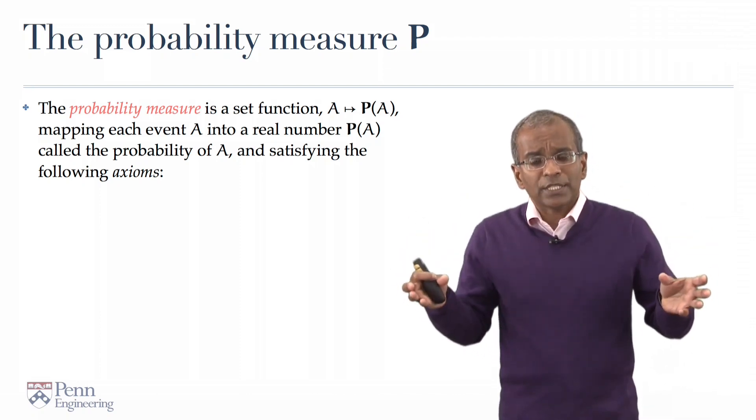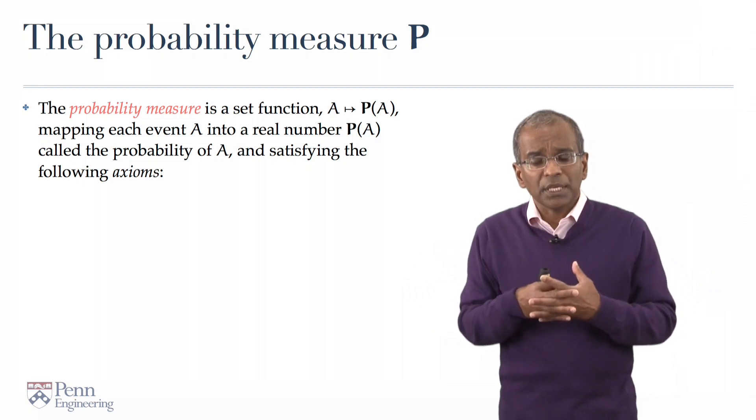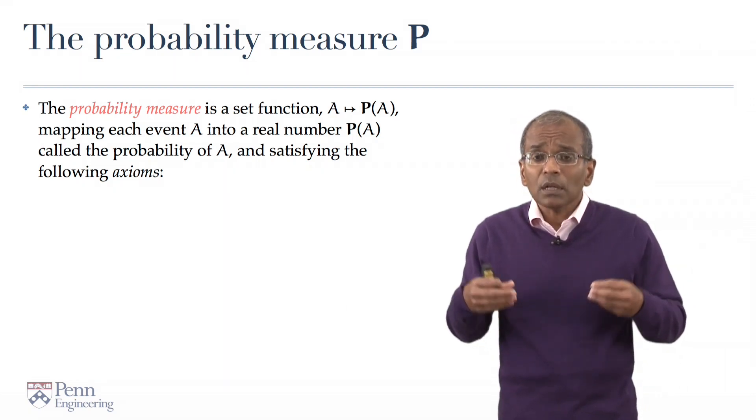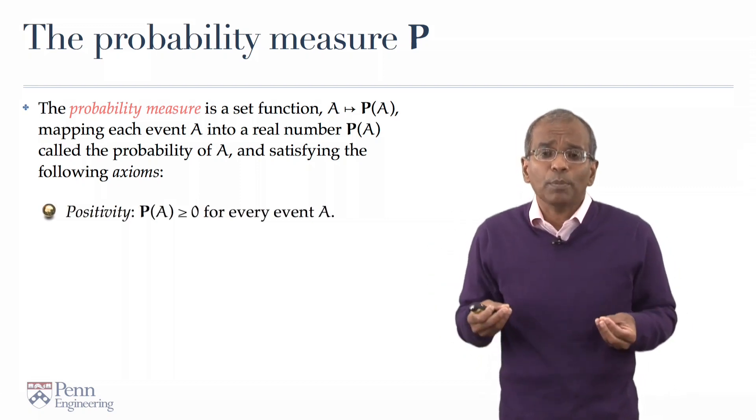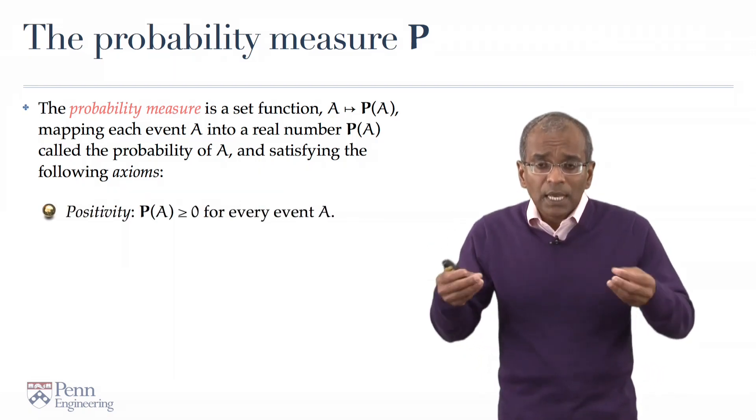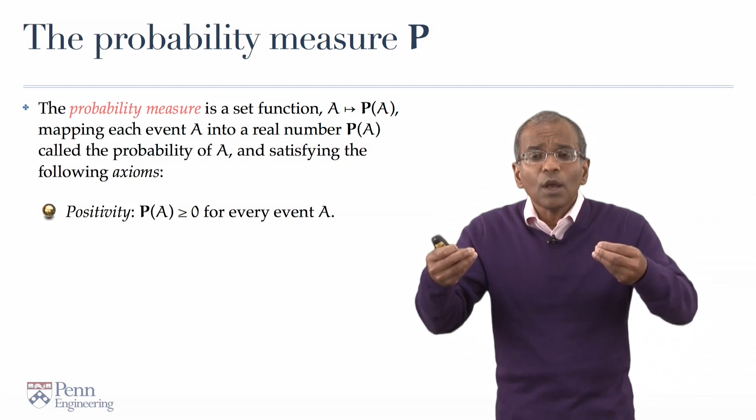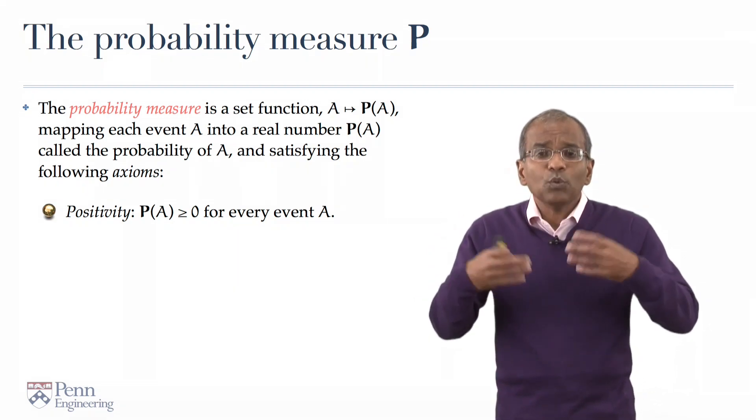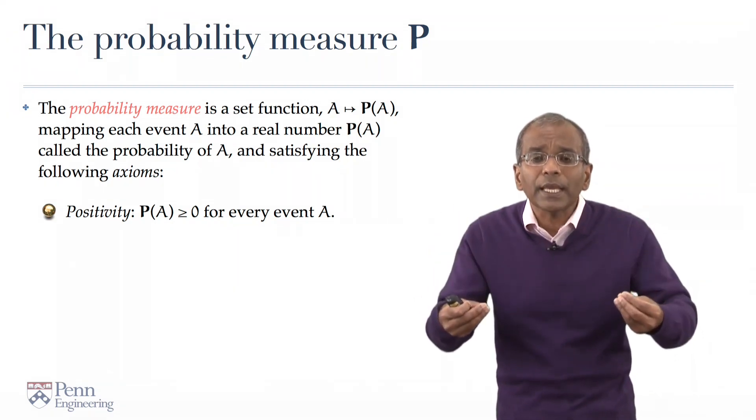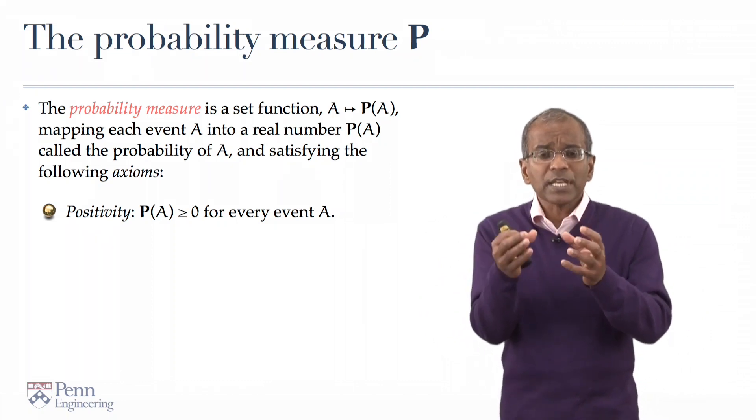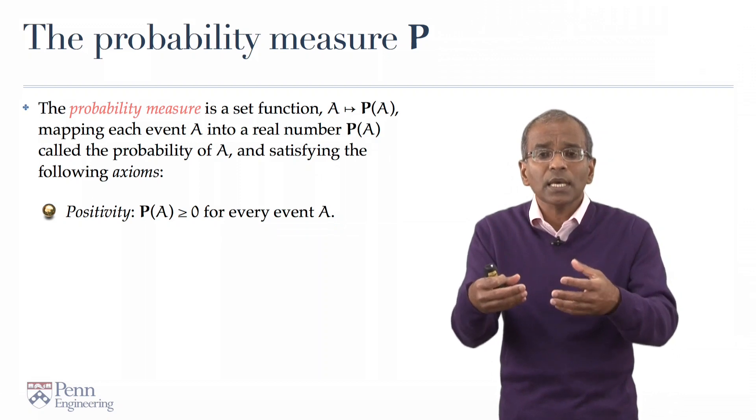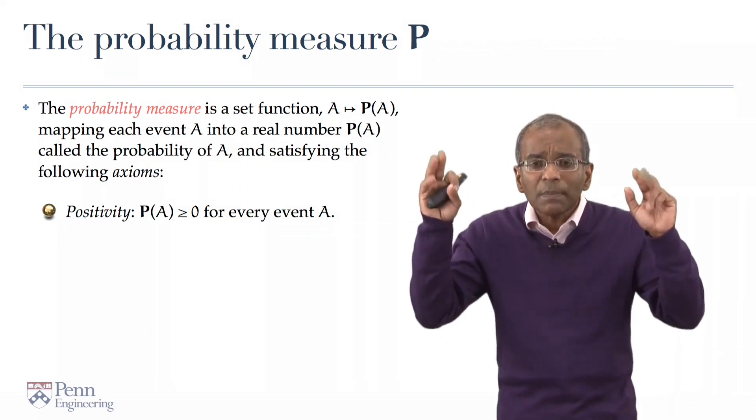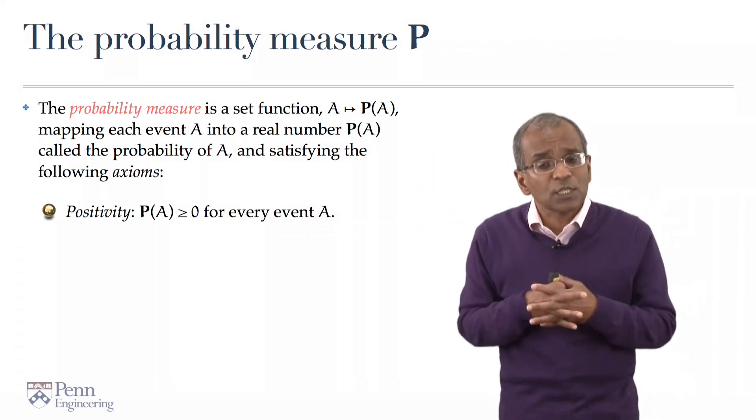Well, what kinds of properties should this set function, p, have? Well, we draw from our experience, and we saw the three fundamental properties. First, the set function p of A, in words, the probability of the event A, should represent something like the frequency that A occurs in many independent trials of that experiment.